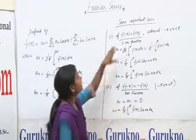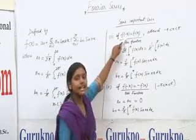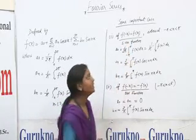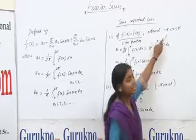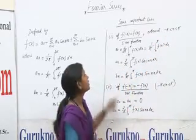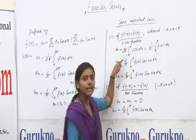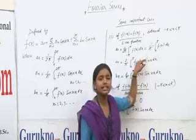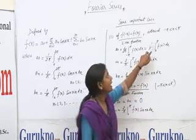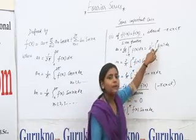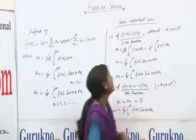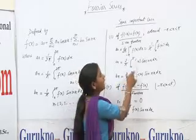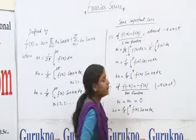First, if f(−x) equals f(x), then the given function is even function and interval x belongs to −π to +π. Then the value of a0 is 1 upon 2π integration −π to +π f(x) dx, which gives us 1 upon 2π integration 0 to π f(x) dx. And the value of an equals 2 upon π integration 0 to π f(x) cos nx, and bn equals 2 upon π integration 0 to π f(x) sin nx dx.